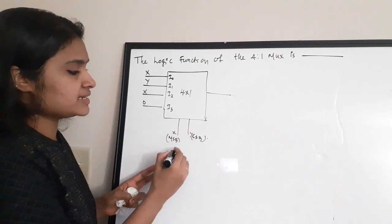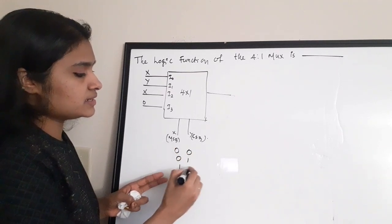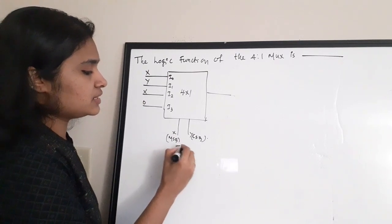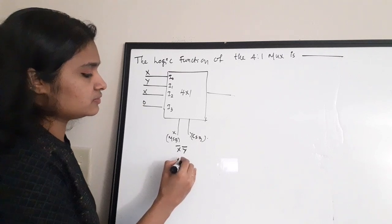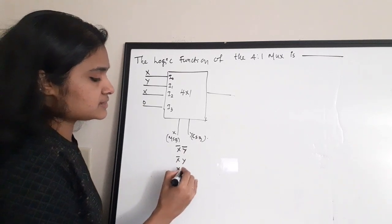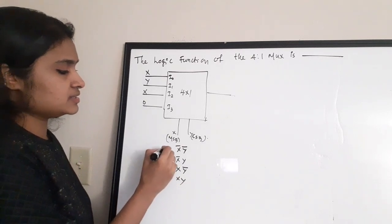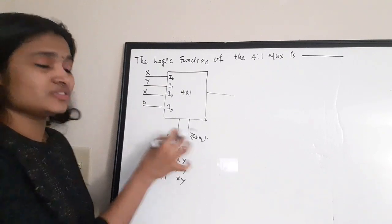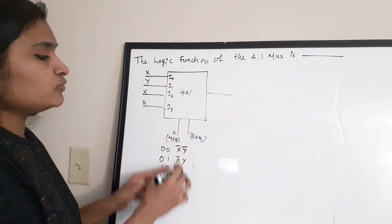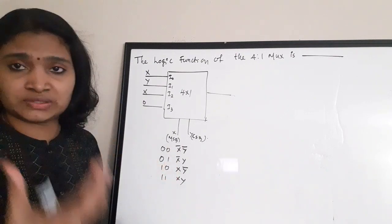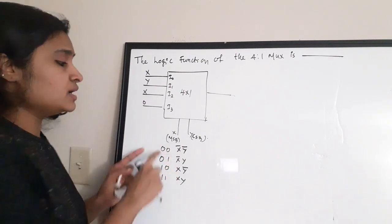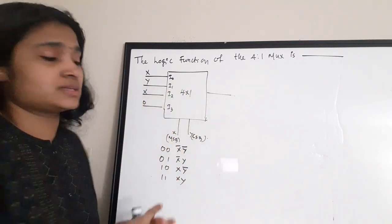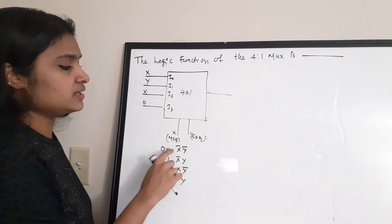The various combinations of X and Y are: 00, 01, 10, and 11, represented as X̄Ȳ, X̄Y, XȲ, and XY respectively. For each of these four select line combinations, the corresponding input is passed to the output — that is the basic working of a MUX.